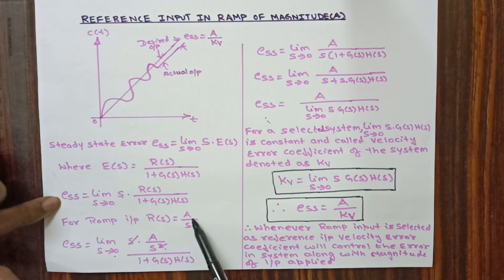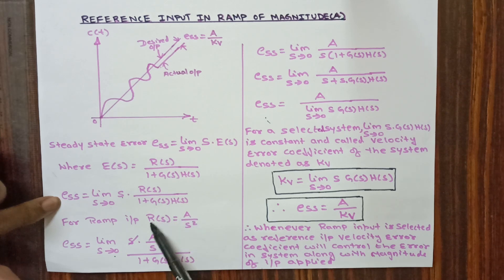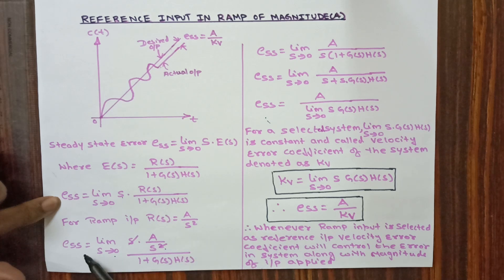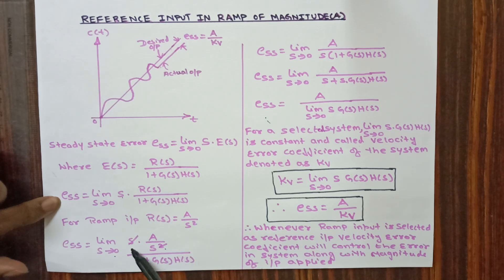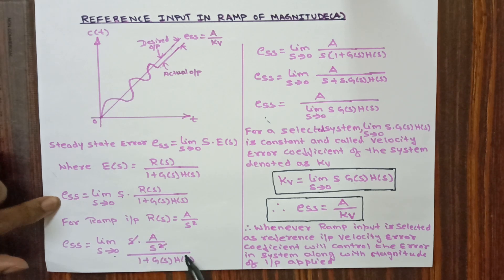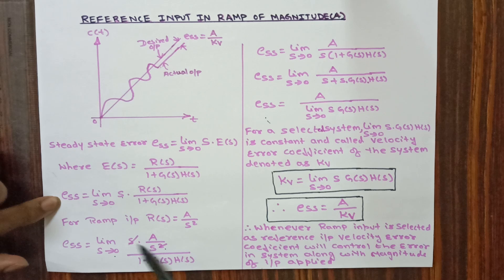By substituting E(s) in the equation we get ESS equivalent to limit s tends to 0, s into R(s) divided by 1 plus G(s) into H(s). For ramp input, R(s) is equal to A divided by s squared. Dividing by 1 plus G(s) into H(s), the s squared and s cancel.